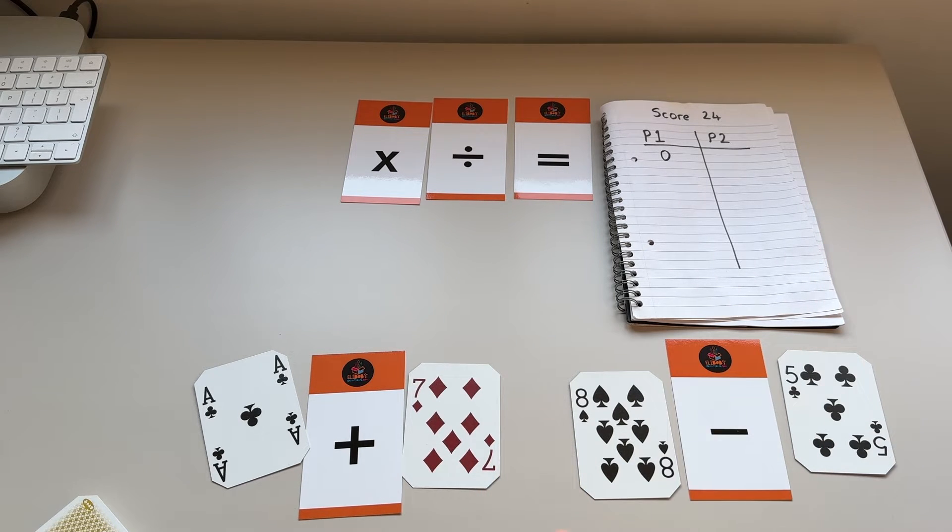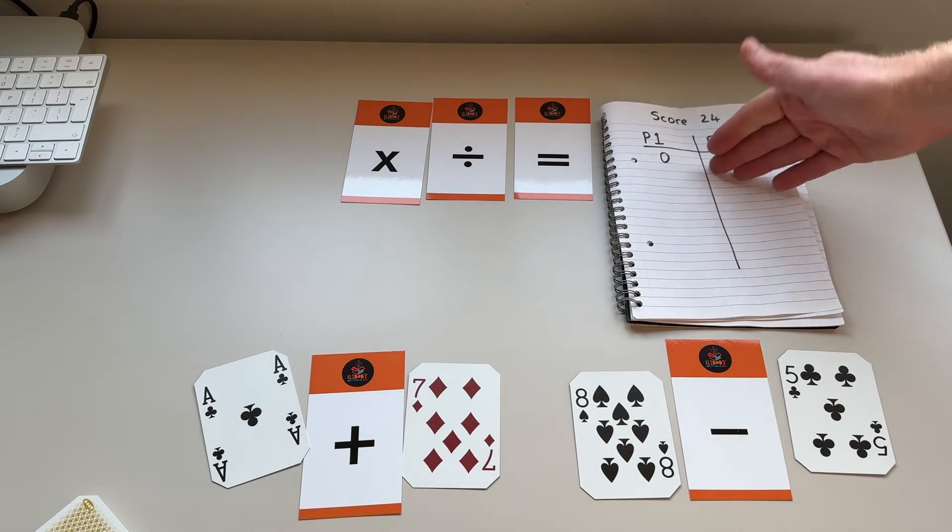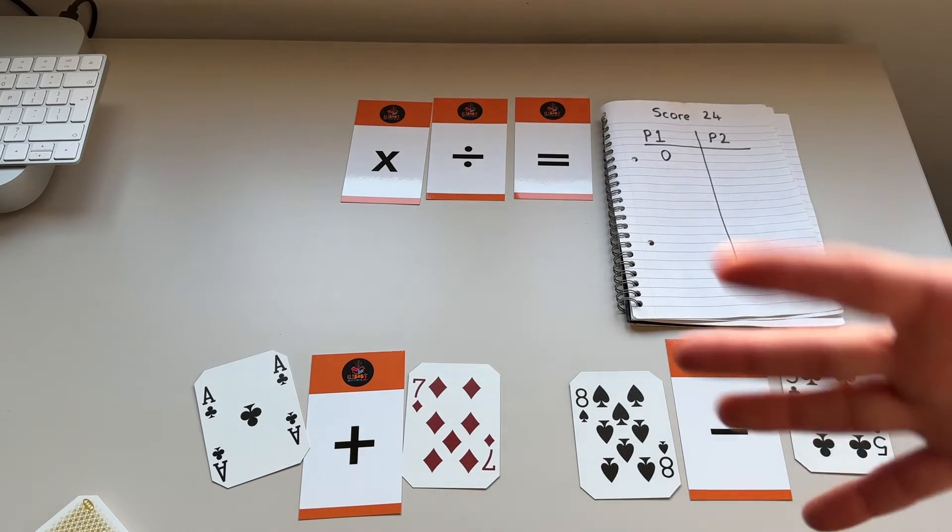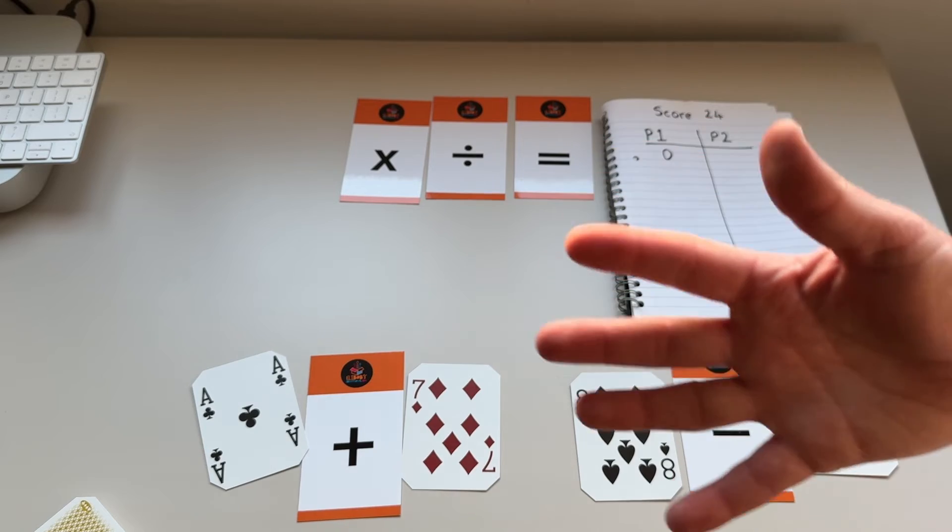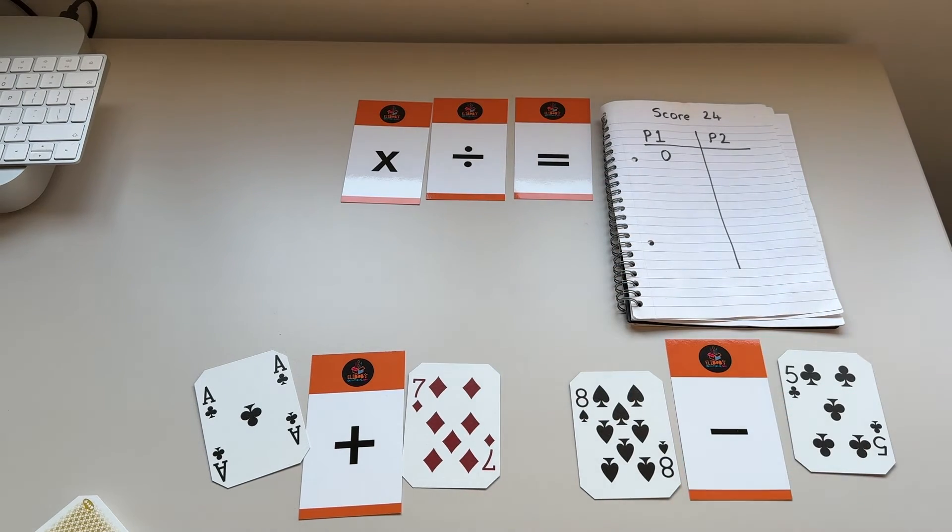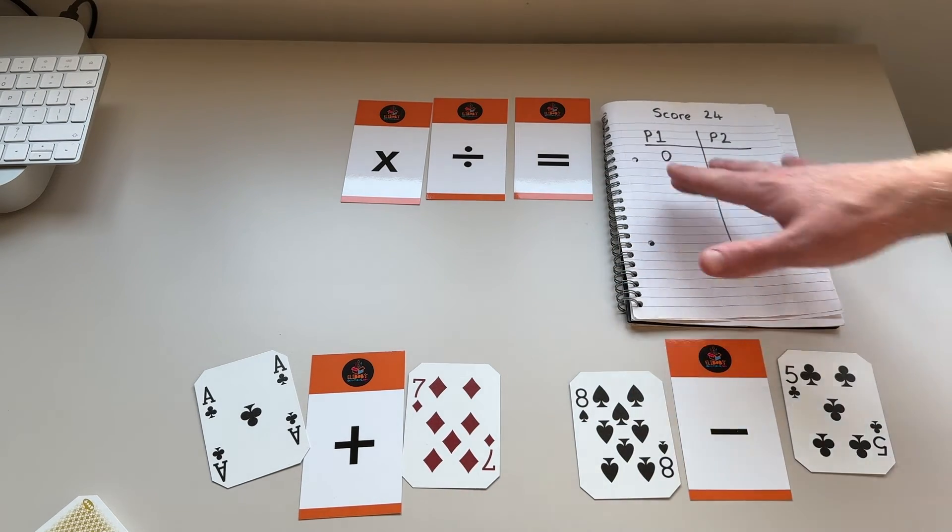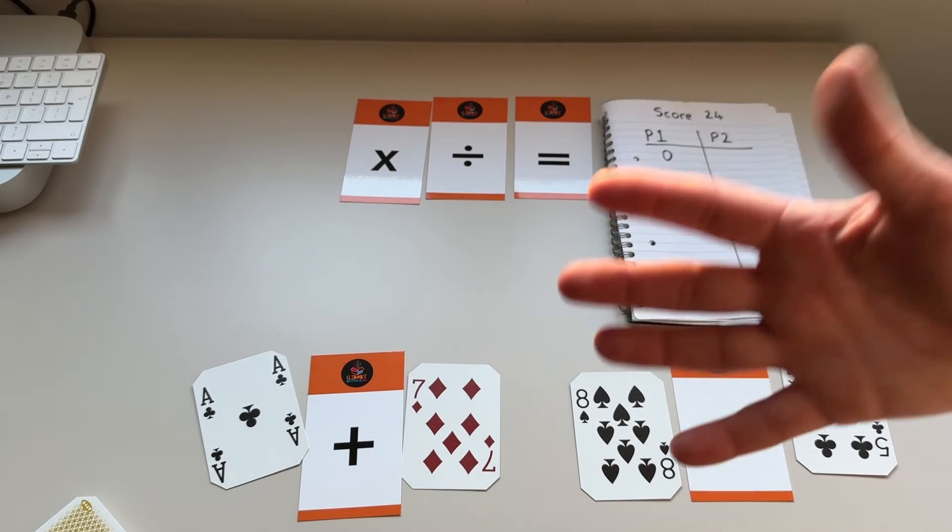Now, the loser of the game is the person who ends up with the most amount of points after five rounds of playing. And the winner of the game is the person who ends up with the lowest score after five rounds of play.